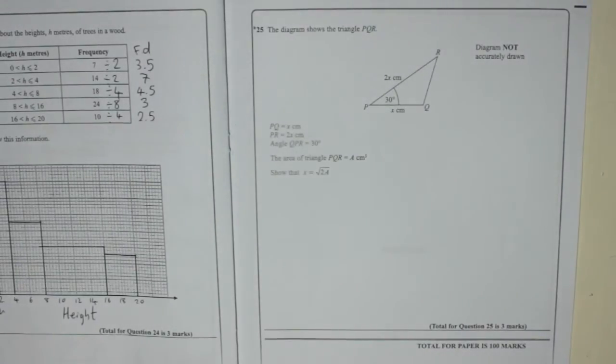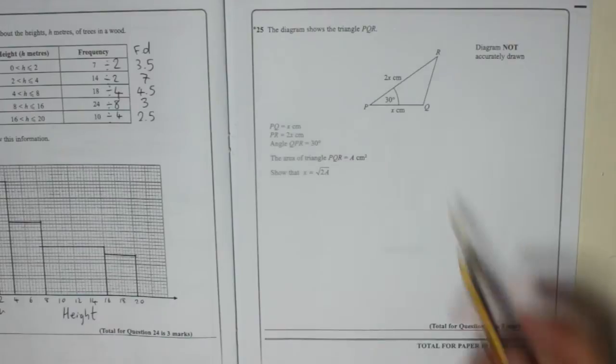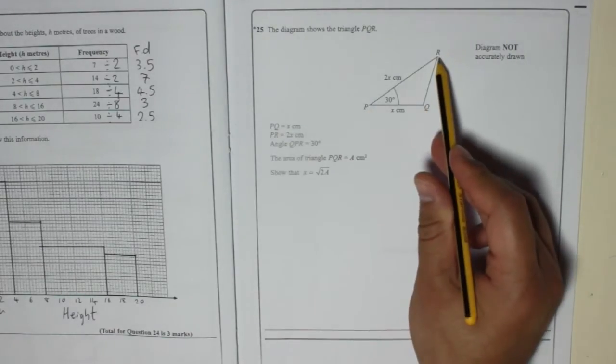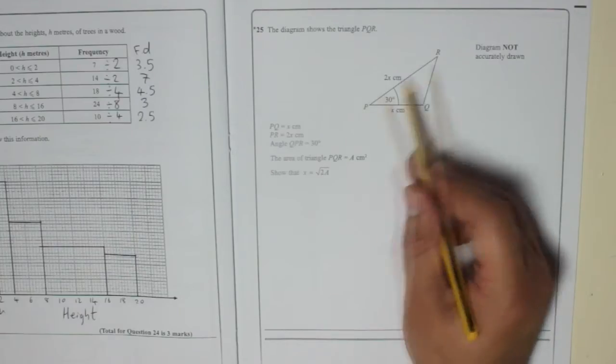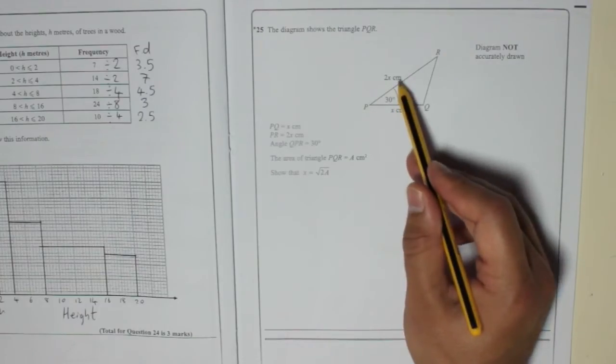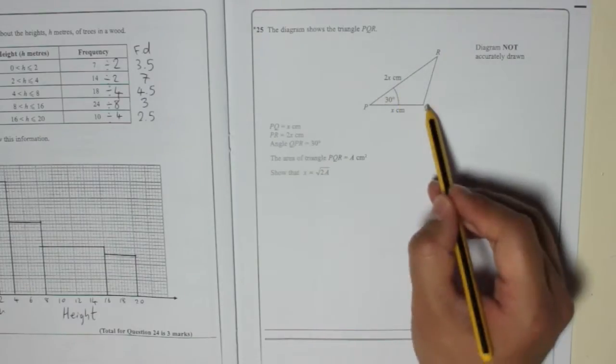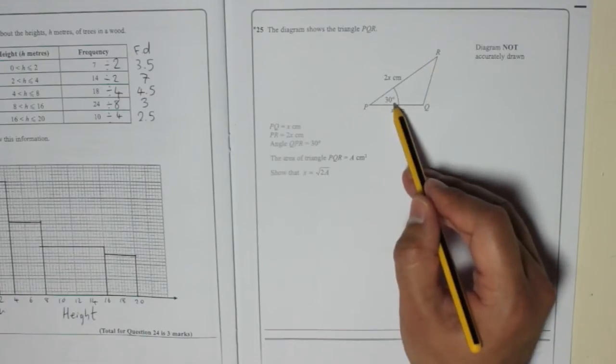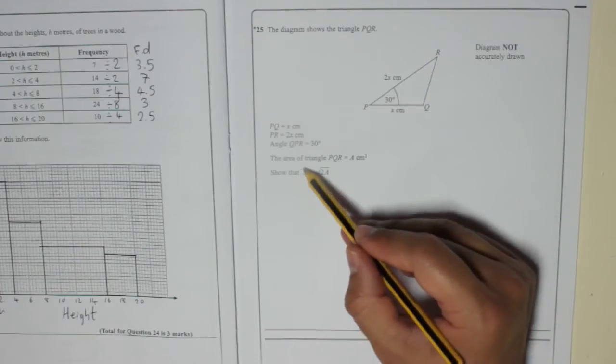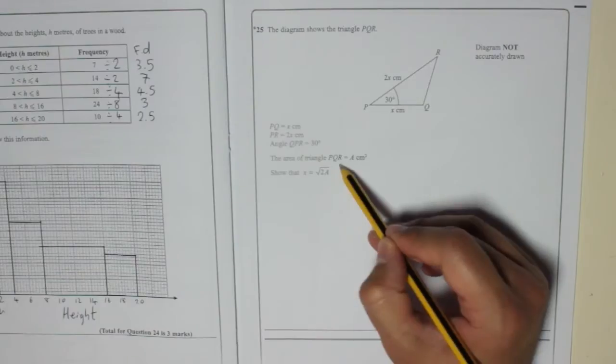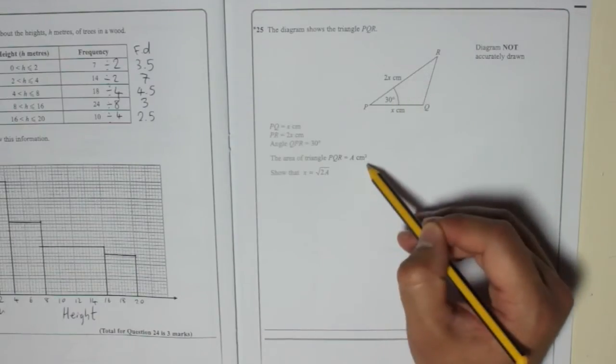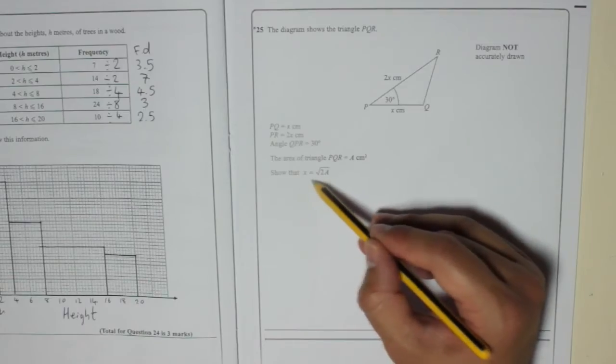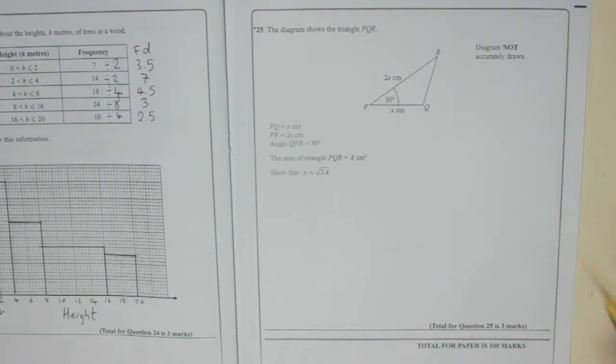Right, last question. The diagram shows the triangle PQR. You've got PQ is x centimeters, PR is 2x centimeters. The angle QPR is 30 degrees. The area of triangle PQR is a centimeters squared. So the area of the whole thing is a centimeters squared. Show that x equals 2 square root of 2a.